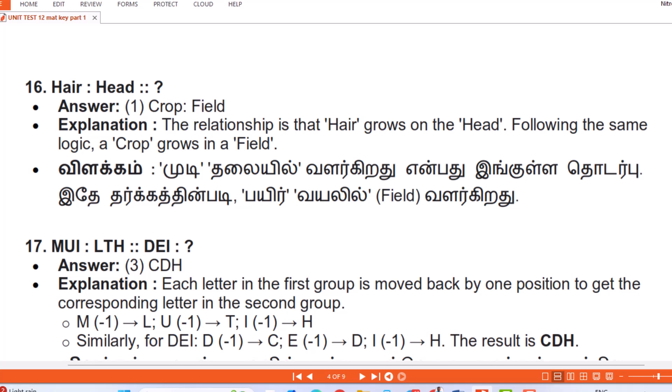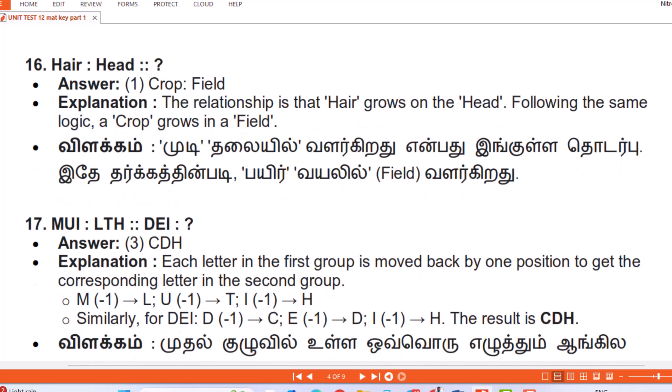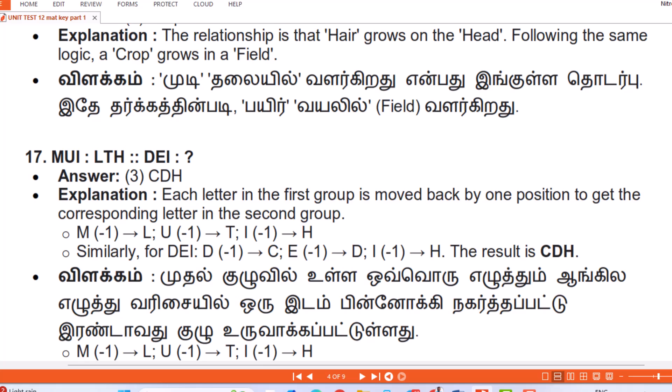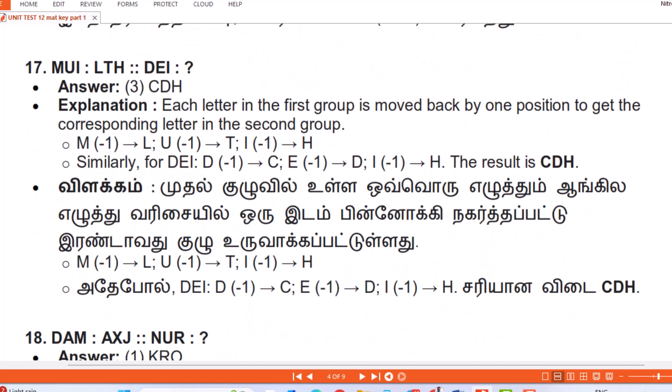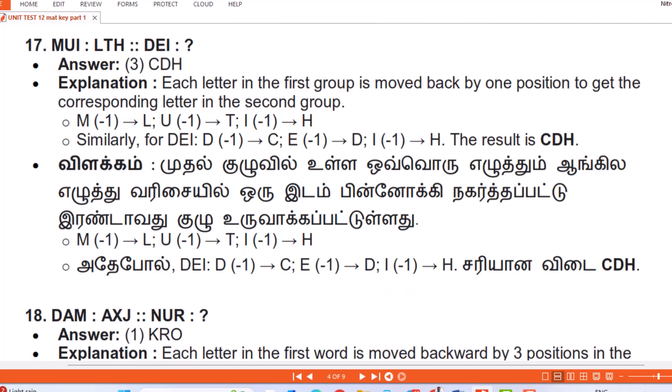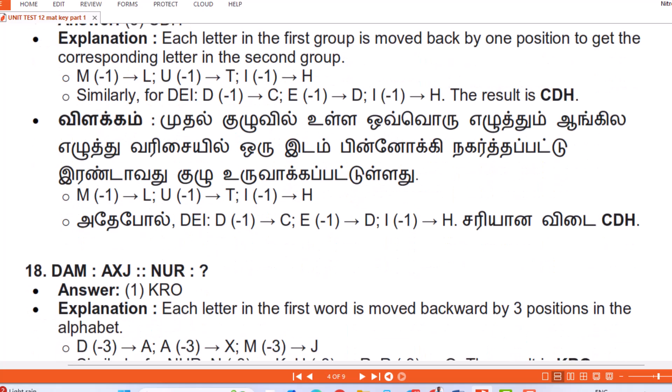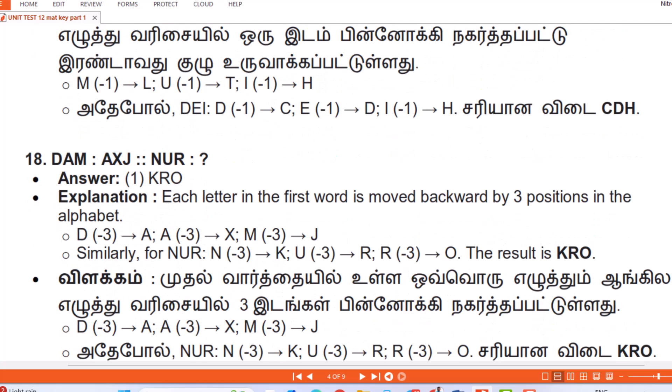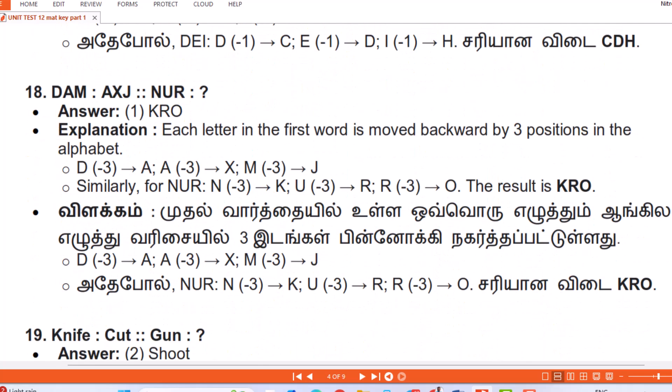Question 17: Mlth : Dei :: Answer — Cdh. Explanation: Each letter in the first group is moved back by one position in the alphabet to get the corresponding letter in the second group. M-1=L, l-1=k... wait — O-1=N gives L, U-1=T, I-1=H → O gives 'Dei'. Similarly for Dei: D-1=C, e-1=d, i-1=h → the answer is Cdh.